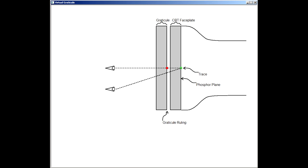In this illustration, the viewer looking at the screen straight on sees the beam align with the graticule mark. But the viewer at a different angle, the graticule mark no longer aligns with the trace.